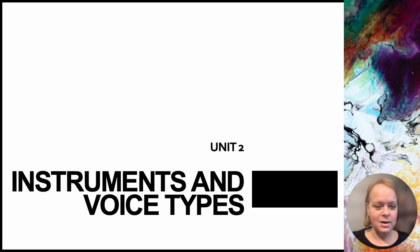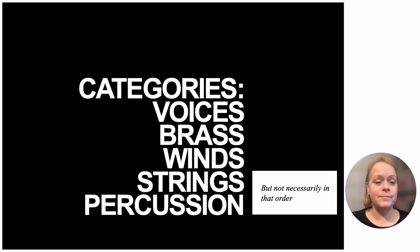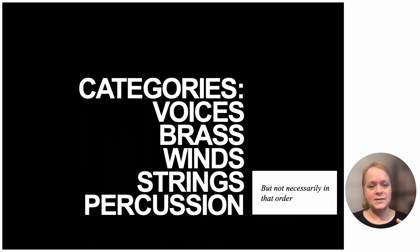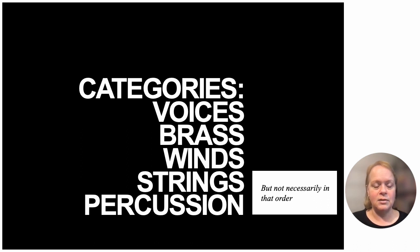Moving forward into Unit 2: instruments and voice types. We have different categories — voices, brass, winds, strings, and percussion, though not necessarily in that order. I like to put brass at the top because I'm a brass player — a tuba player! All of these make up timbre, which is covered in detail in our Pearson Revel book where you can listen to the different categories.